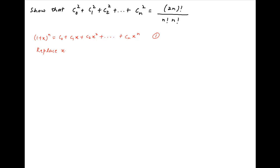Now replace x with 1/x in Equation 1. We get (1 + 1/x)^n = C0 + C1/x + C2/x² + ... + Cn/x^n. Let's call this Equation 2.